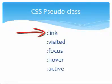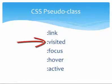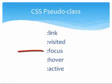The Link pseudo-class is the default state for a hyperlink that has not been clicked. The Visited pseudo-class is the default state of a hyperlink that has been clicked. The Focus pseudo-class is triggered when the hyperlink has keyboard focus, which typically occurs when the user presses the Tab key to move from hyperlink to hyperlink on a web page.